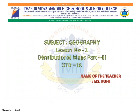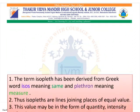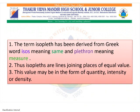In this part, we are going to study isopleth maps. We have seen contour maps and isobar maps in earlier classes. Let us study in detail the meaning of the word isopleth. The term isopleth has been derived from the Greek words isos, meaning same, and plethon, meaning major. Thus, isolines are lines joining places of equal value. This value may be in the form of quantity, intensity, or density.